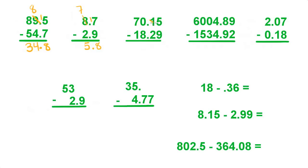Over here we have 5 minus 9 — we have to borrow, make it 15. 15 minus 9 is 6. Then 0 minus 2 — can't do that, I have to borrow. Since this is a 0 we have nothing to borrow from, so we have to borrow from the 7. Make that a 6, make that a 10, then cross that out, make it a 9, and make that a 10. We have to keep borrowing as far as we can all the way down to where it's needed. So 10 minus 2 is 8.